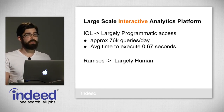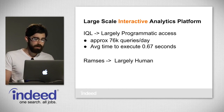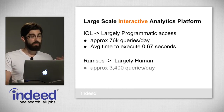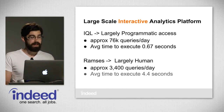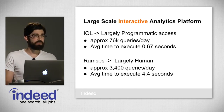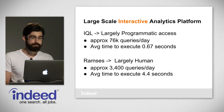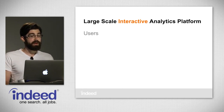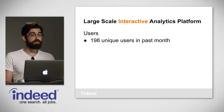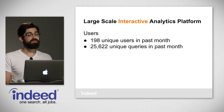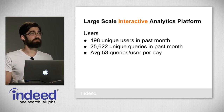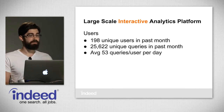When we say interactive, we're talking about speed — when you ask a question, you get an answer back very quickly. IQL, which Zach was showing off, is largely programmatic access at Indeed, and we get about 76,000 queries per day with an average execution time of 0.67 seconds. Ramsey's is still around, largely for human use with the backend now powered by Imhotep — about 3,400 queries a day with an average of 4.4 seconds. We have 198 users in the past month who used it, doing 25,622 unique queries — an average of 53 queries per user per day.